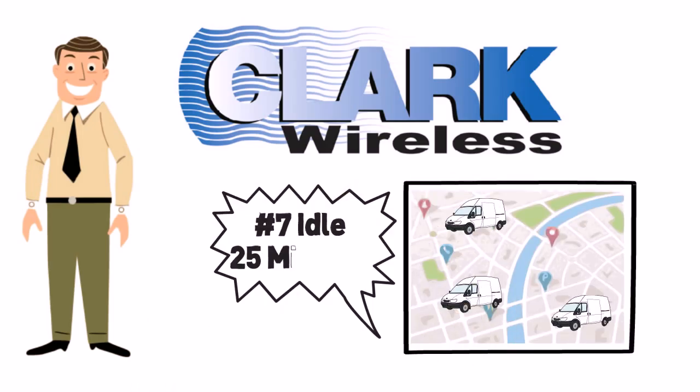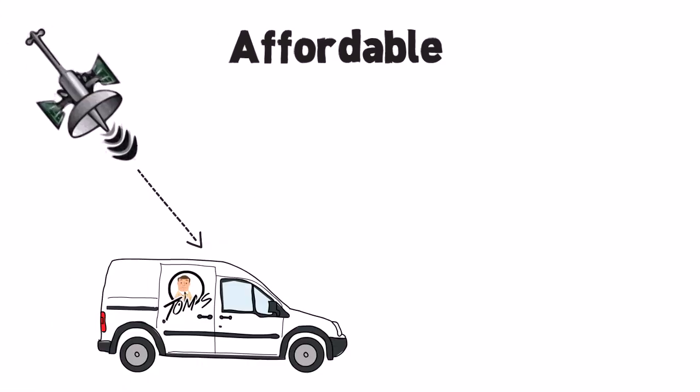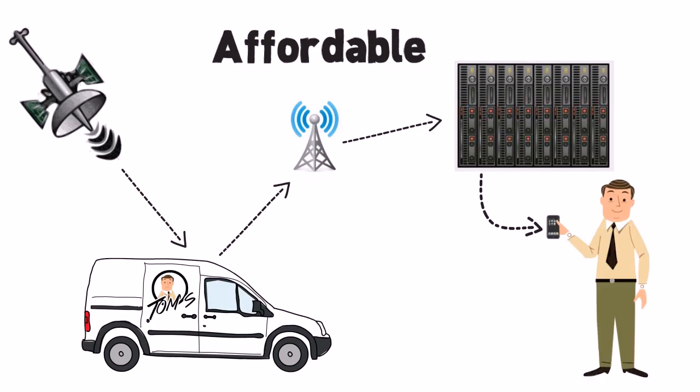Tom not only learns where his vehicles are, but instantly knows what they are doing. Tom learned that this process has become very affordable because the satellites now communicate with the vehicle and use a much lower-cost cellular network that relays all of the information to the data center and sends it on to him instantly.